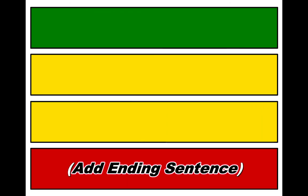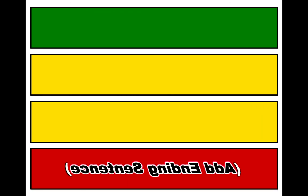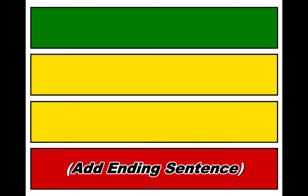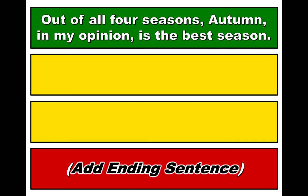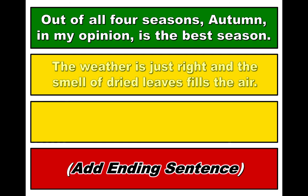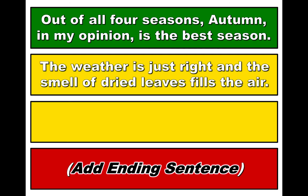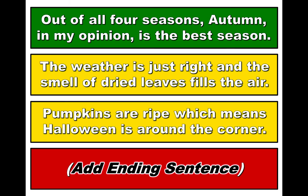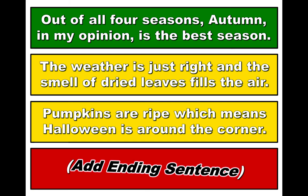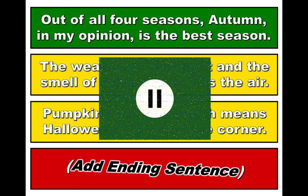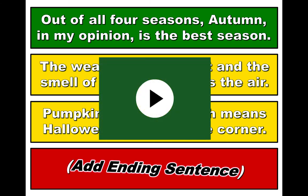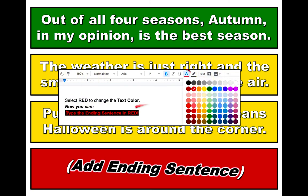For this paragraph, you will be adding the ending sentence using your Google Doc. The topic sentence is: Out of all four seasons, autumn, in my opinion, is the best season. The supporting sentences are: The weather is just right and the smell of dried leaves fills the air. Pumpkins are ripe, which means Halloween is around the corner. Add the ending sentence that restates the main idea of this paragraph. Don't forget to change the text color to red to type your ending sentence.